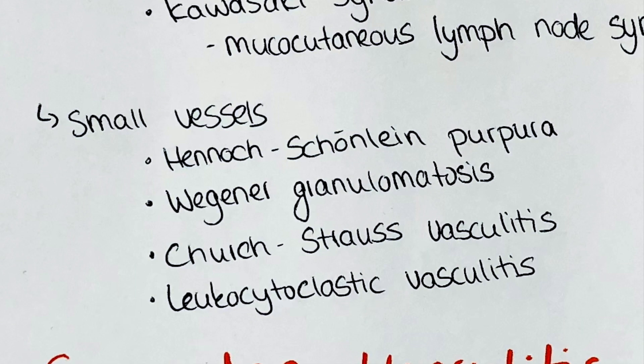Henoch-Schönlein purpura is also known as anaphylactoid purpura or purpura rheumatica. It is a type of IgA vasculitis presenting with hemorrhages in the skin, mucous membranes, GI tract and kidneys. In this disorder, antigen-antibody complexes are deposited in the walls of the blood vessels. This occurs especially after infections with beta-hemolysing streptococci but also in other infections and due to different medications to which the body develops an immune reaction.